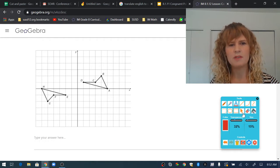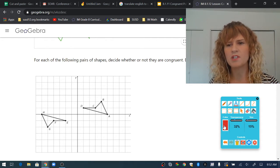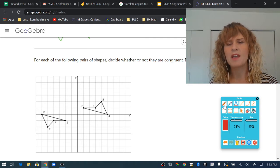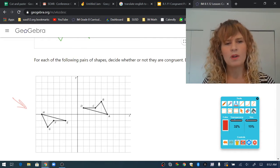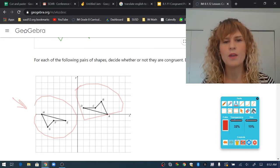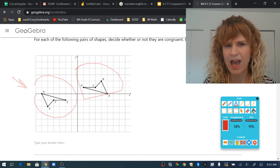In the next example it asks you for each of the following pairs of shapes decide whether or not they are congruent. Explain your reasoning. Are these congruent? Remember congruent figures can be moved by rigid transformations. So what kind of rigid transformation is that?